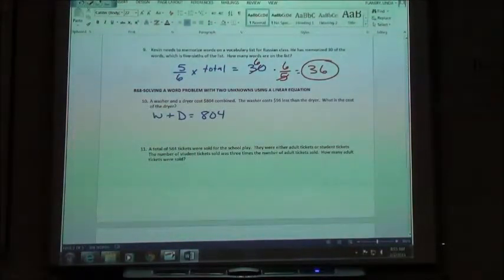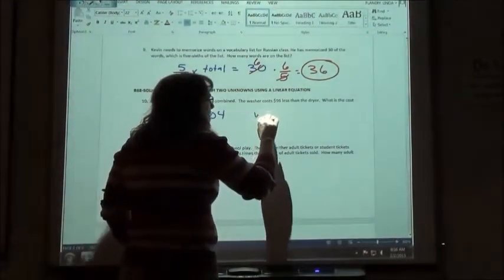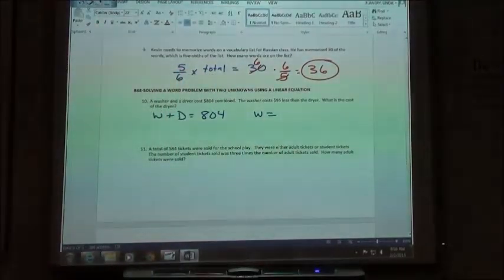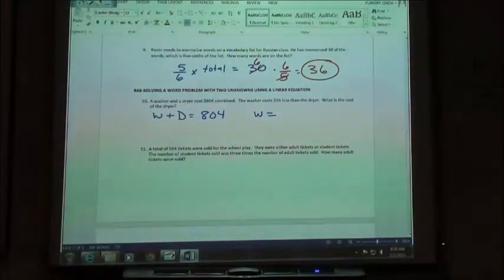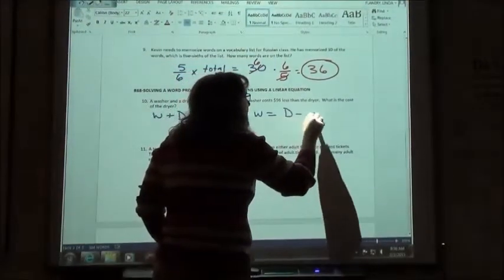The washer costs $96 less than the dryer. Whichever item is mentioned first, that variable is going to be by itself. The washer is, the washer costs, W equals. Then I've got to translate $96 less than the dryer. We just did those ones at the beginning, and if we said that it had a more than or a less than, that has to go on the end of your expression, right?